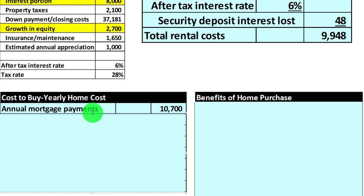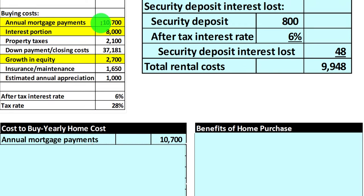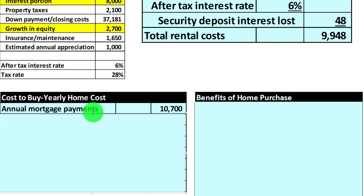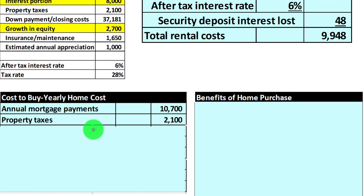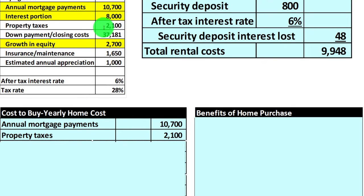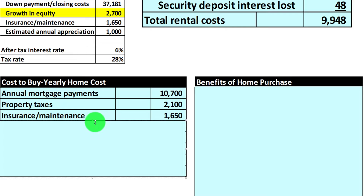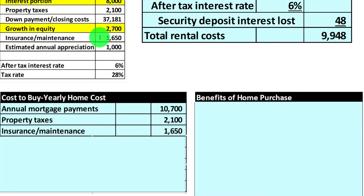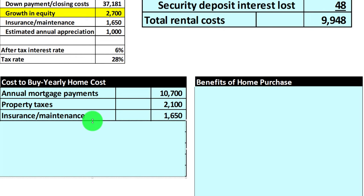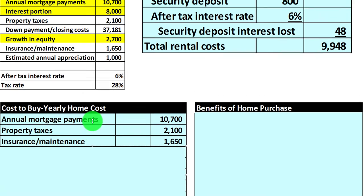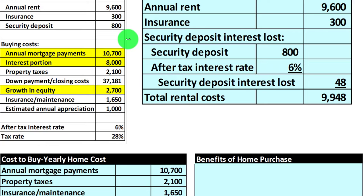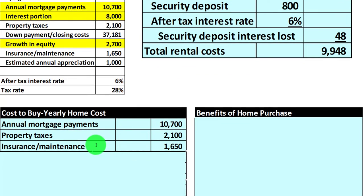On an annual basis, the mortgage payments are $10,700. The property taxes are $2,100 — you can typically get estimates to figure out what property taxes will be in your particular area; those are more localized. The insurance and maintenance we estimate at $1,650. When you own the home, maintenance costs are a differentiating factor — unlike renting where those are typically covered by the landlord.